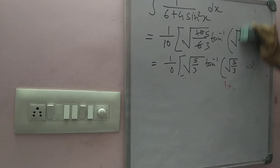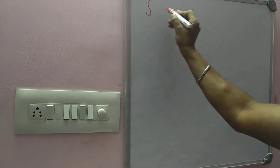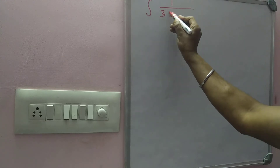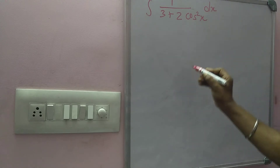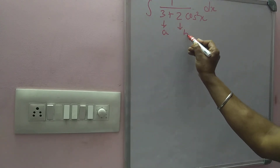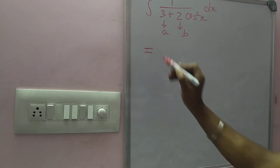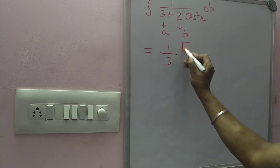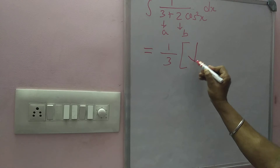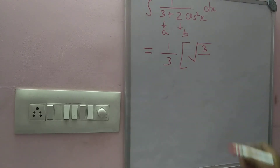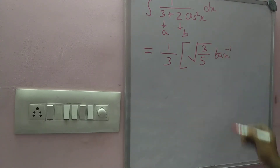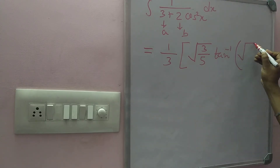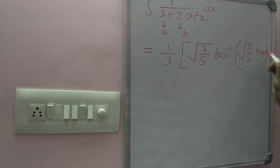Now we take the cos²x format. Example: integration of 1 by (3 plus 2·cos²x) dx. Here a is 3 and b is 2. The general solution gives 1 by 3, inside bracket root under a by (a plus b), which is 3 by (3 plus 2) equals 3 by 5, times tan inverse of root under (3 by 5) into tan x, plus c.